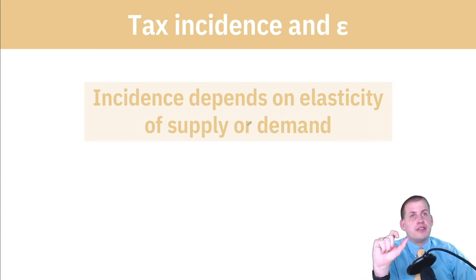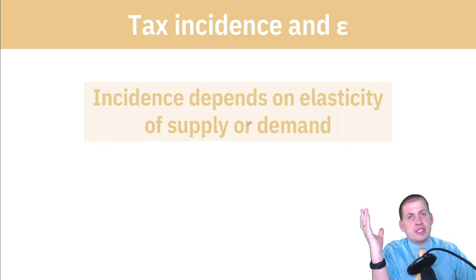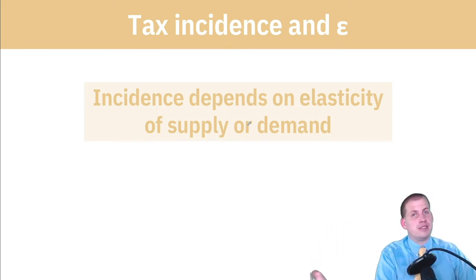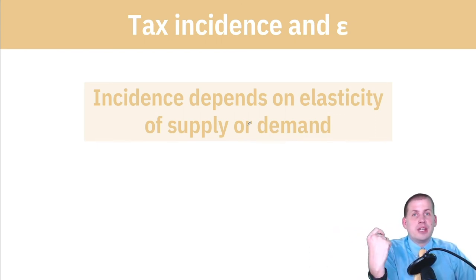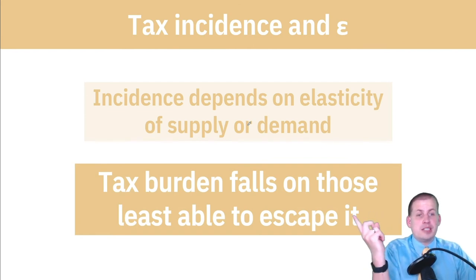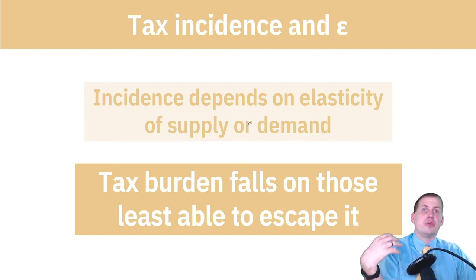Tax incidence depends on how elastic people are. If you're highly elastic and the price changes, you're just going to move away and buy something else — if books get more expensive, you'll buy movies or video games instead. So if you're a consumer and you're highly elastic, you're not going to pay much of the tax burden. The tax burden falls on those who are least able to escape it — those who are most inelastic bear more of the tax burden.